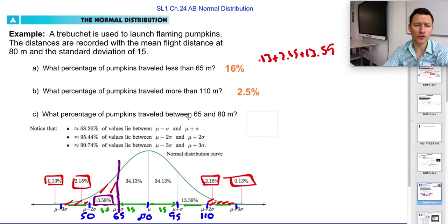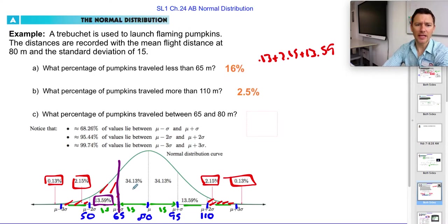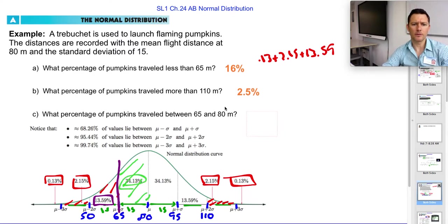And then what percentage of pumpkins traveled between 65 and 80 meters? Let's use a more distinct color. Between 65 and 80 meters? Well, here. So 34%. Well, that may help you visualize.